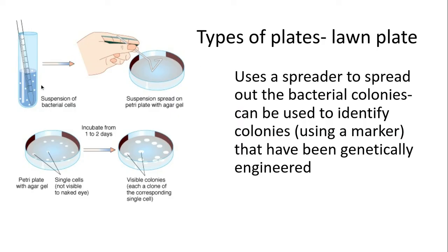Another example is a lawn plate. You'd have your suspension of bacterial cells, put them into the agar gel, and use something called a spreader to spread out the bacterial colonies. This is used in genetic engineering to help identify colonies that have some kind of marker like a green fluorescent protein.